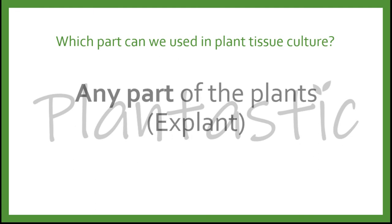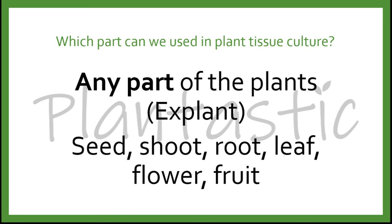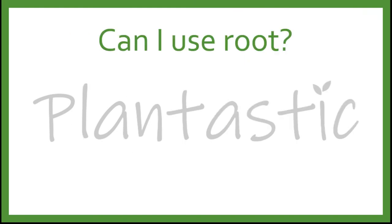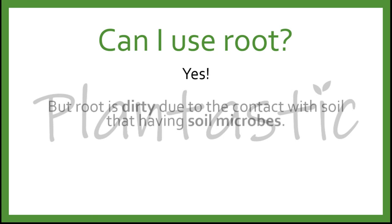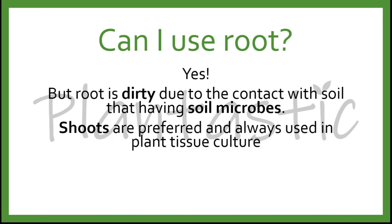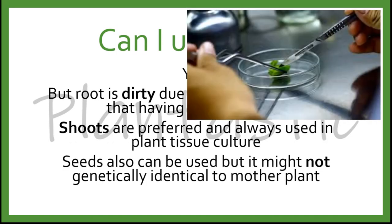Which part of the plant can we use in tissue culture? Basically any part, referred to as an explant — you can use seed, shoot, root, leaf, flower, or even fruit. Can we use the root? Yes, however roots are prone to contamination due to their interaction with soil microbes. It is suggested to use shoots instead. Seeds can be used but are not recommended because they are not genetically identical to the mother plant.